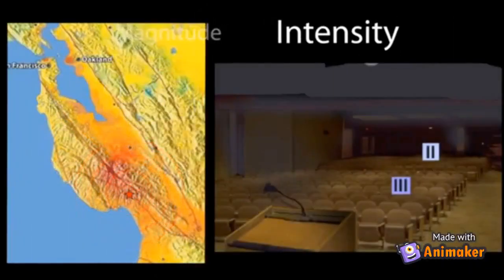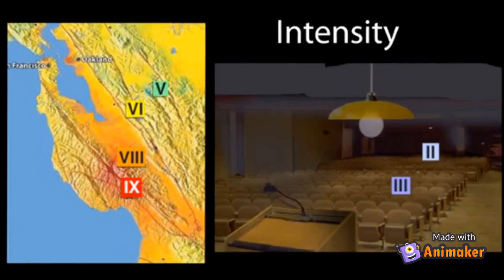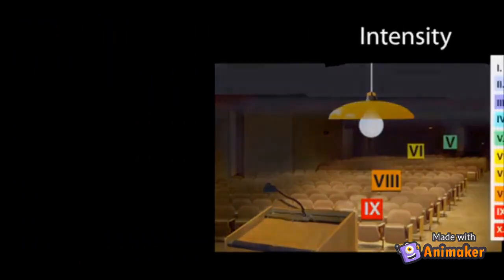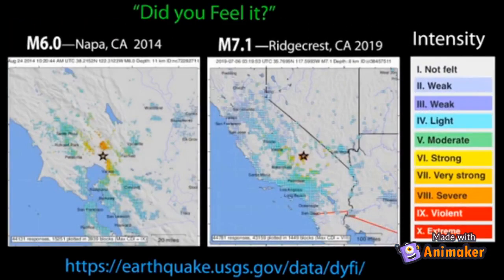The intensity, or shaking level, is like the amount of light from a lightbulb at any spot in a room. A small lightbulb in one area of a room will make that area bright with high-intensity light, but it will leave the distant areas of the room dim with low-intensity light. So, a given earthquake has only one magnitude but will produce different intensities of ground shaking, as shown on the USGS Did You Feel It intensity maps.